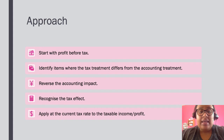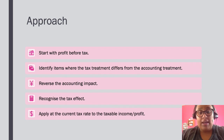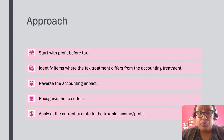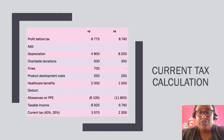The next step is to reverse the accounting impact — if there is an income or expense that was recognized, you subtract the income or add back the expense to remove its effect on profit or loss. Then you recognize the tax effect: if there is a deduction from a tax perspective, you subtract that deduction. Once you have done all of this you will have your taxable profit, and then you simply apply your current tax rate to that taxable profit.